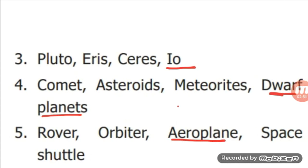Next, Pluto, Eris, Ceres, Io. Io is the odd one. Pluto, Eris, Ceres are the dwarf planets. Io is the natural satellite of Jupiter.